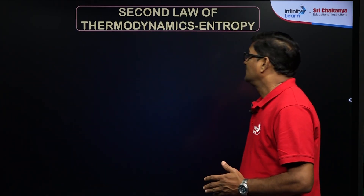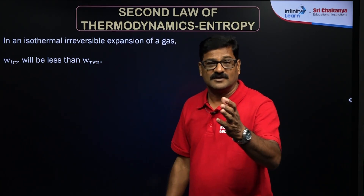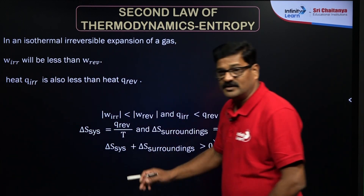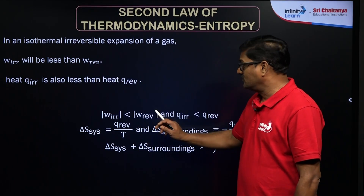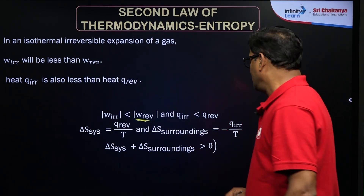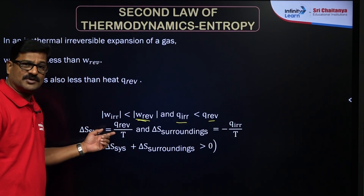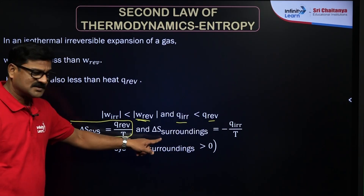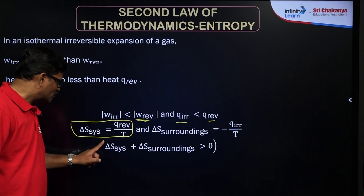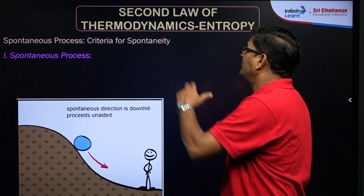At equilibrium, ΔS_system + ΔS_surroundings = 0; for an irreversible process, ΔS_system + ΔS_surroundings > 0 — that is the second law of thermodynamics. In an isothermal reversible expansion of a gas, work done in the irreversible process is less than work done in the reversible process. Work done in a reversible process is always maximum. ΔS_system = q_reversible / T and ΔS_surroundings = −q_reversible / T, so their sum must be greater than zero for an irreversible process.